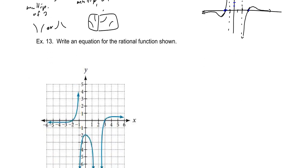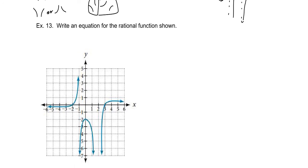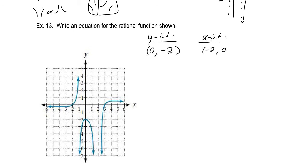Our last question is to write the equation for a given rational function. Going in the opposite direction now: we need an equation with a y-intercept of negative 2, and x-intercepts at (negative 2, 0) and (3, 0).